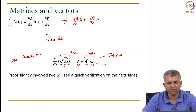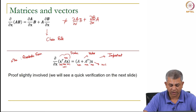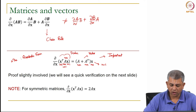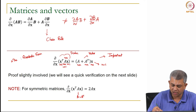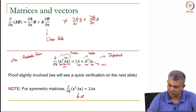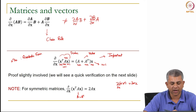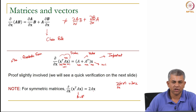We will not do the full proof here, but a quick verification will be shown. A useful special case: if A is symmetric (A = A^T), then the relation simplifies to 2Ax, which looks remarkably like the scalar formula d/dx(α·x²) = 2αx. Here, for symmetric A, del/del x of (x^T A x) = 2Ax.